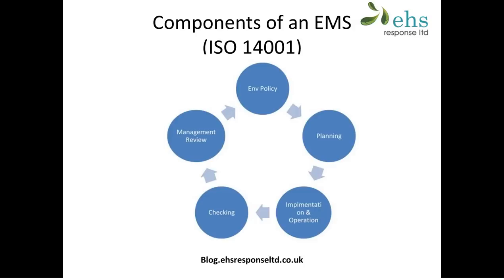We then have a process known as management review. As its name suggests, it's a check by management on the system. It doesn't happen very often — it can be once a year. It usually takes the form of a meeting of top management with the environmental manager giving a presentation about the EMS, such as how the organisation is doing with reaching its objectives and targets and the results of audits, so any improvements required can feed back into the policy and planning.